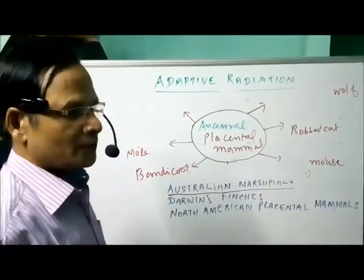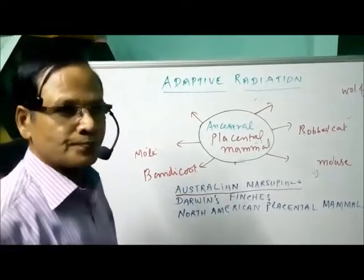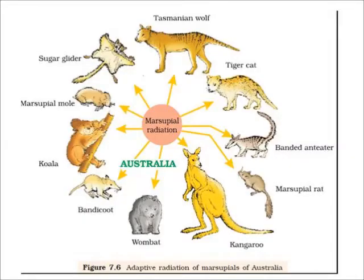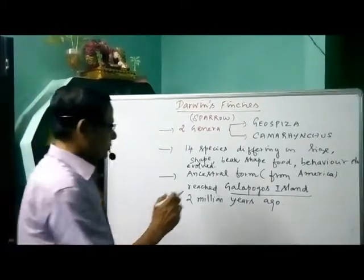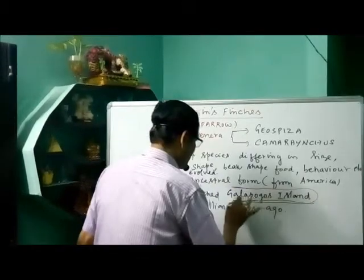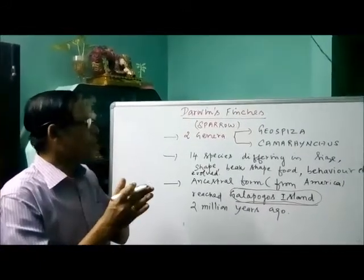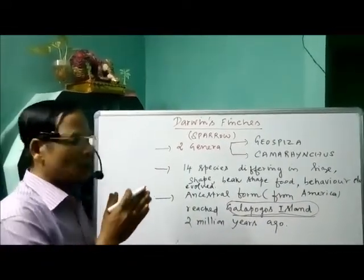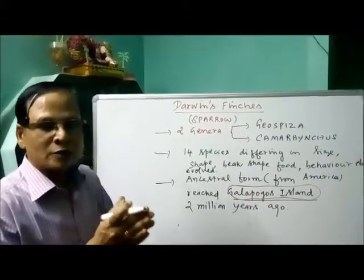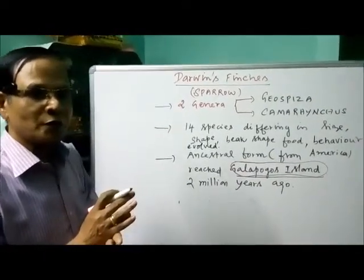The third example is Darwin's finches. When Darwin visited the Galapagos Islands — called the living laboratory of evolution — he collected different varieties of a bird, a sparrow called Darwin's finch. The ancestral form of Darwin's finches reached the Galapagos Islands from South America, and then settled and evolved into 14 different recognized species.